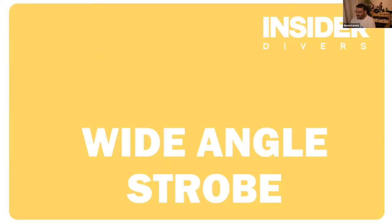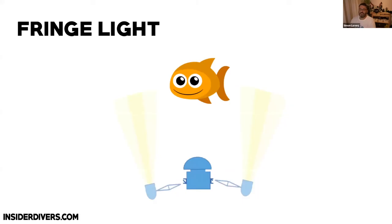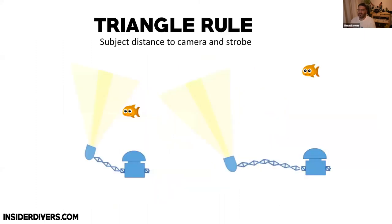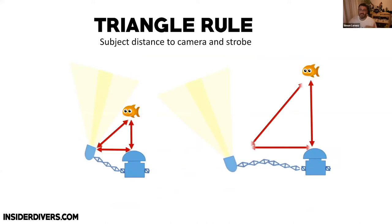Now I'm going to talk about wide-angle strobe. We talked a lot about strobes in session two — the fringe light concept, and the triangle rule, which basically means the closer the subject is to the camera, the closer the strobe needs to be to the lens. I'll show a bit more about that in a moment — that was covered in session two. We also talked about backscatter, so I'll skip through that.